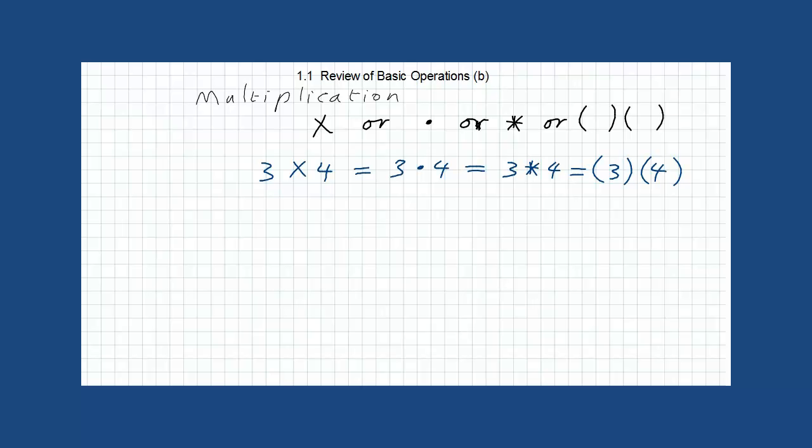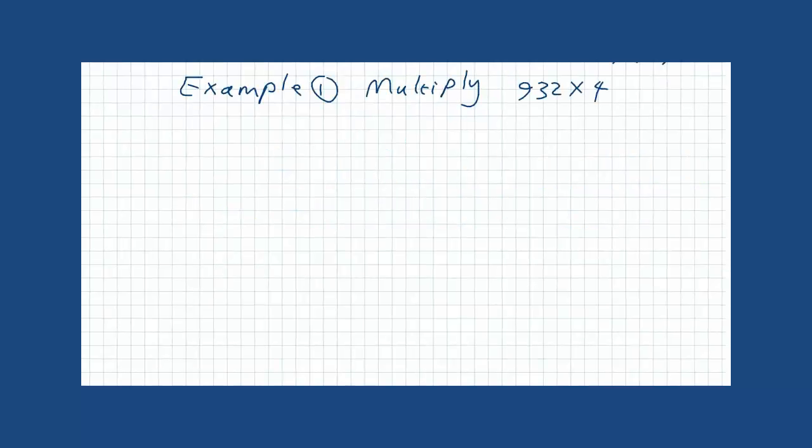Let us give you some examples on that. Example 1. Multiply 932 times 4. To do this operation, we write it vertically. So it's 932 times 4. We start multiplying 4 with every digit in the first number. So, 4 times 2 is 8.